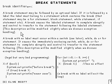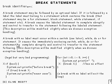A break with no label must occur within either a switch statement, a while, do, or a for statement — it cannot be an if statement. It causes the immediately enclosing switch, while, do, or for to complete abruptly, and control transfers to the statement following it. That will have to be modified slightly when we discuss exception handling.